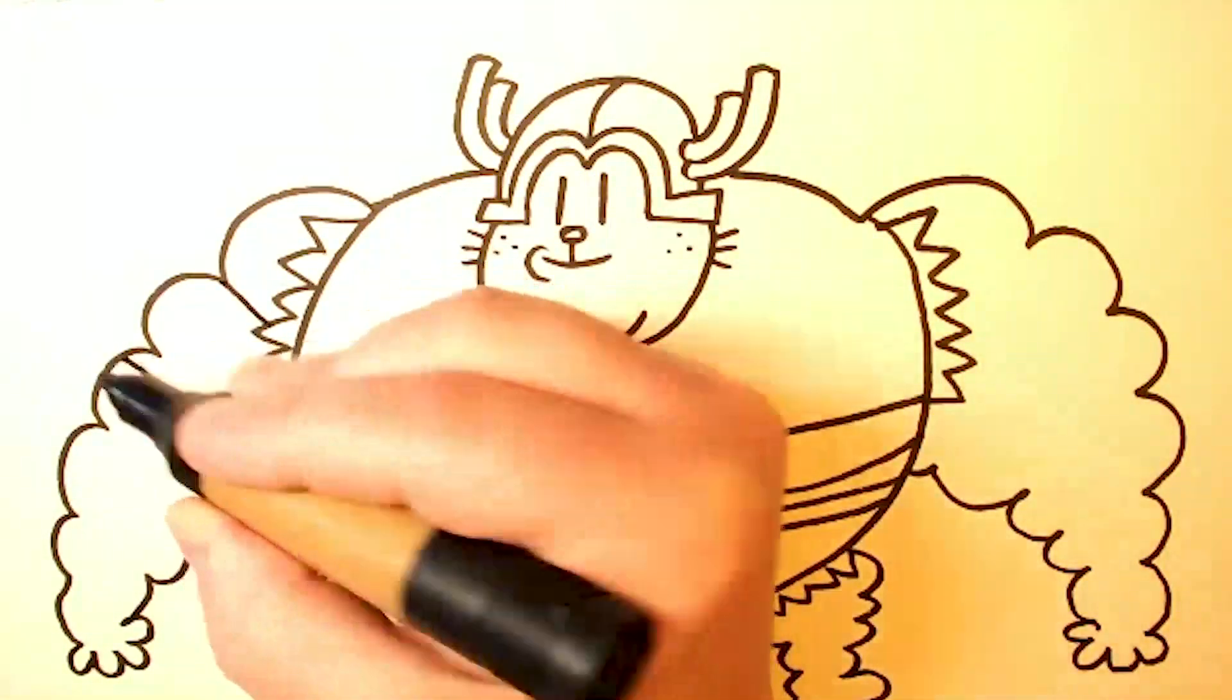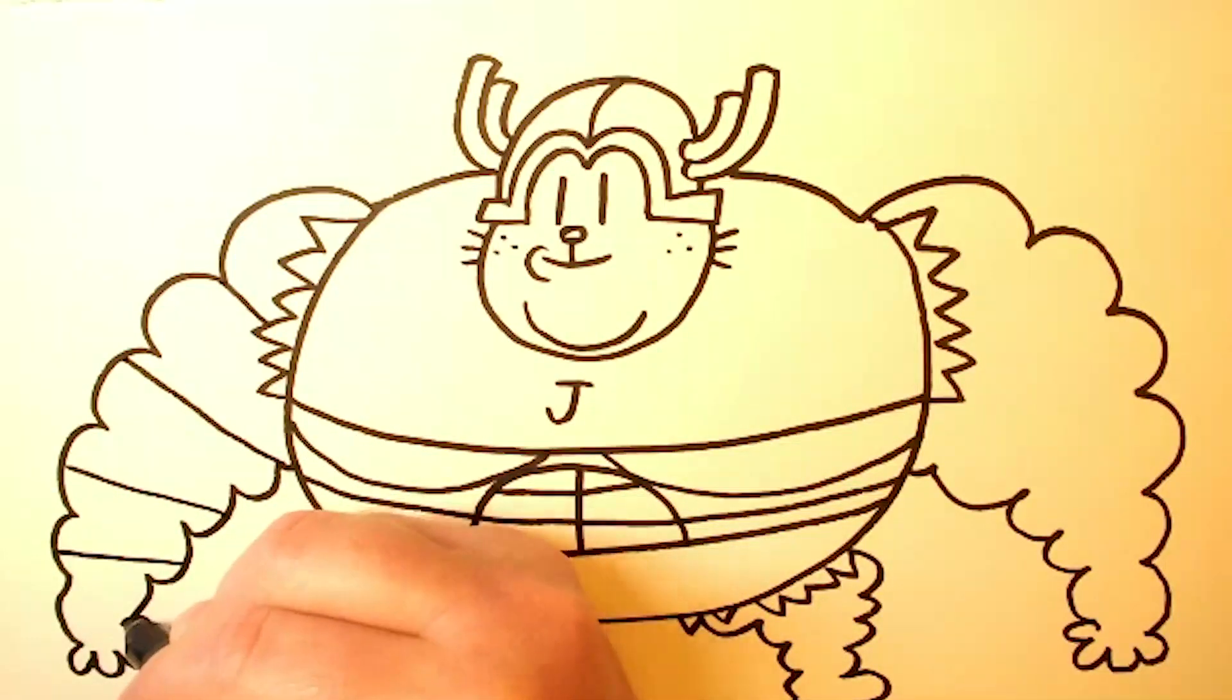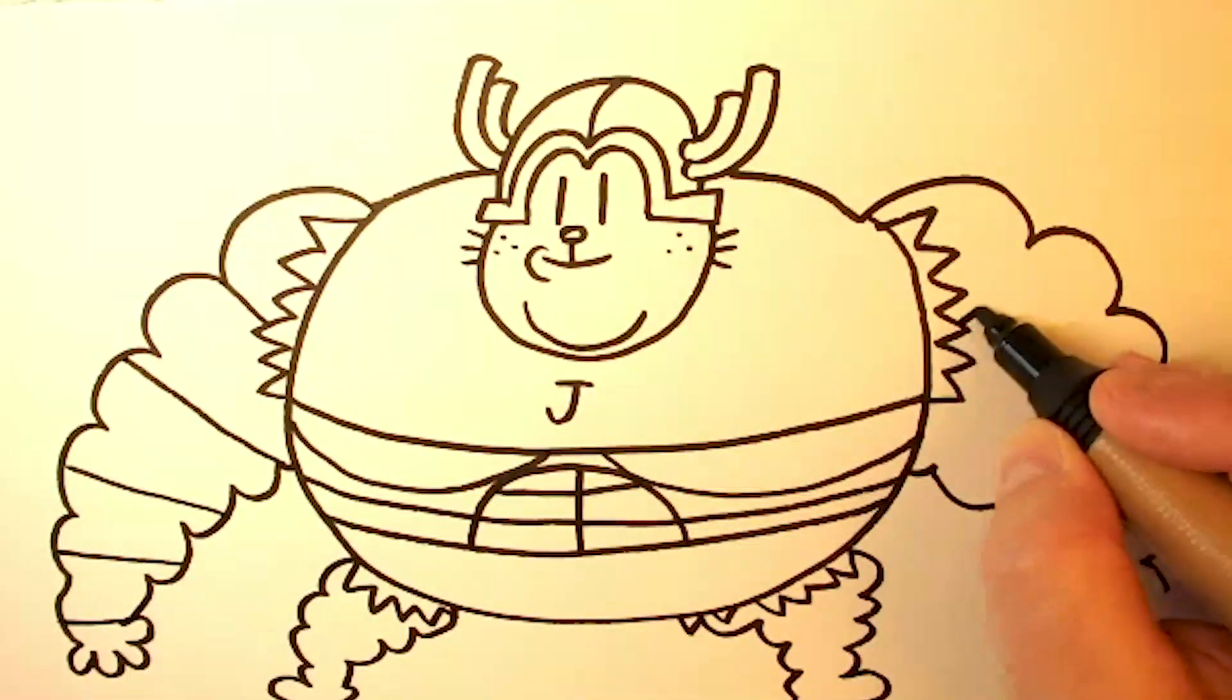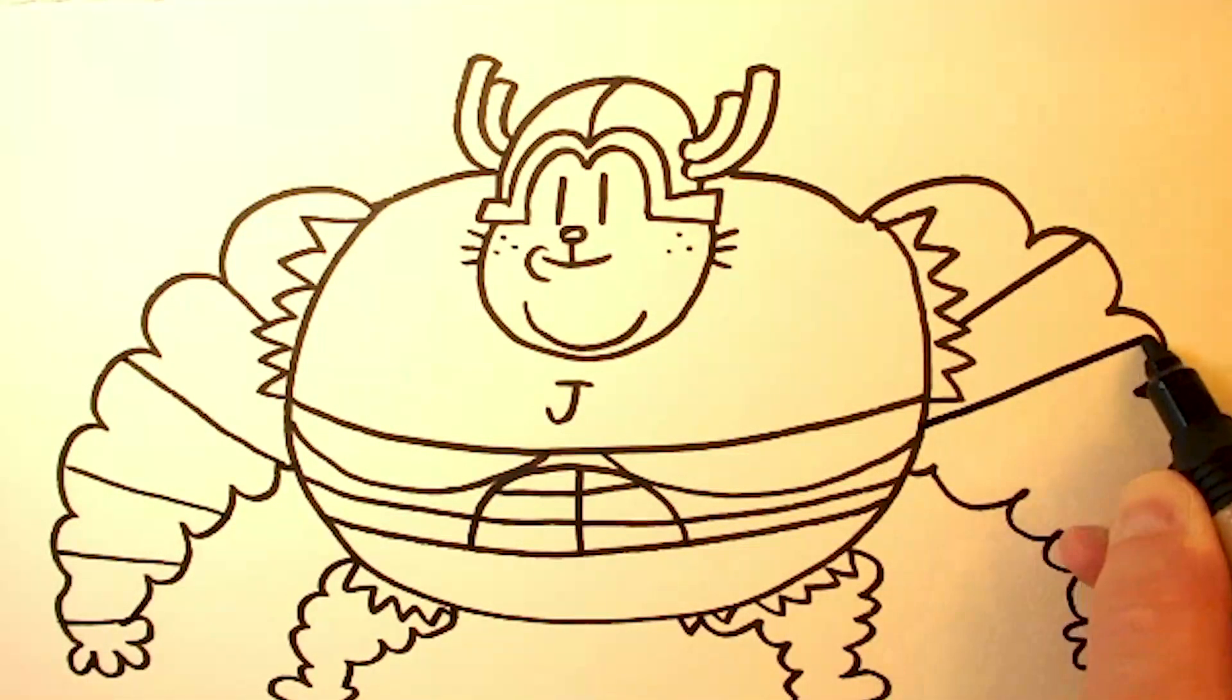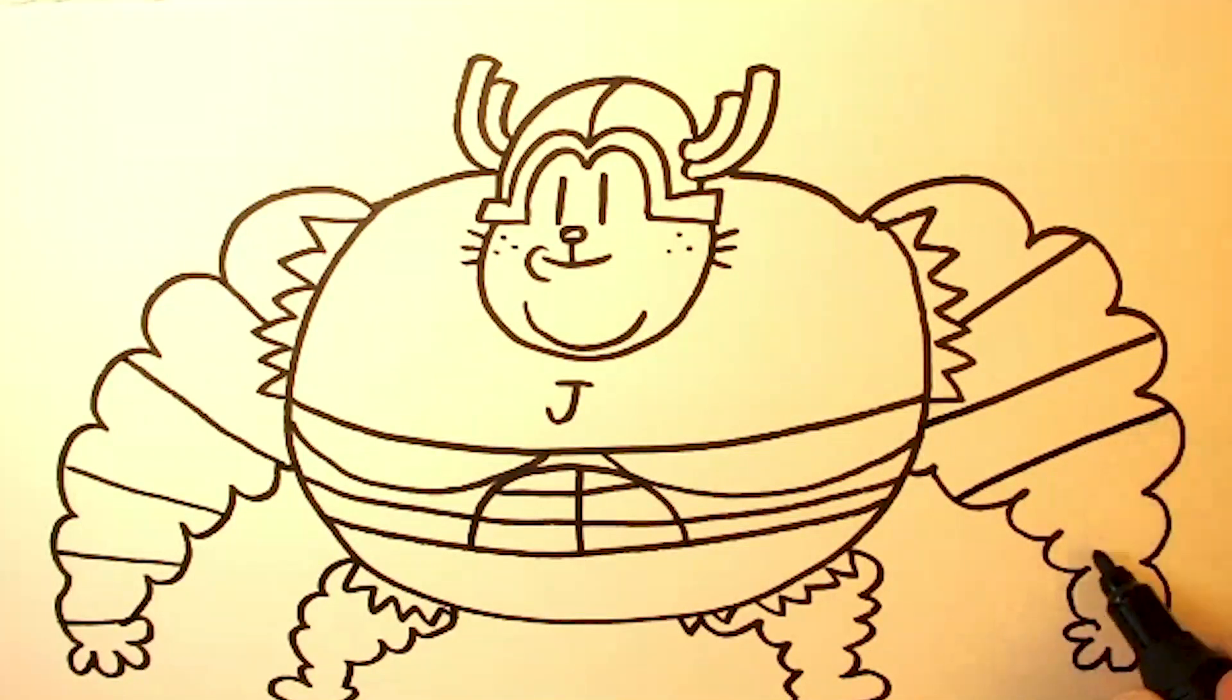Then we're going to add just some random lines across his arms and legs. These are his stripes. Because Big Jim is a striped cat.